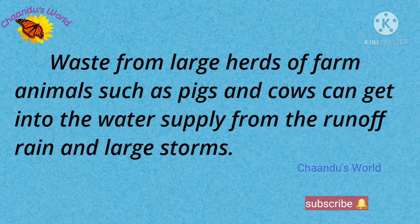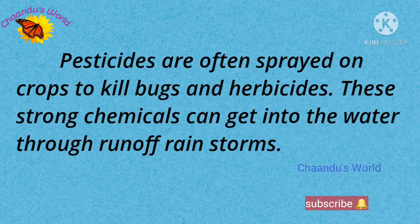Waste from large herds of farm animals such as pigs and cows can get into the water supply from runoff rain and large storms. Pesticides are often sprayed on crops to kill bugs and herbicides, and these strong chemicals can get into the water through runoff rainstorms.